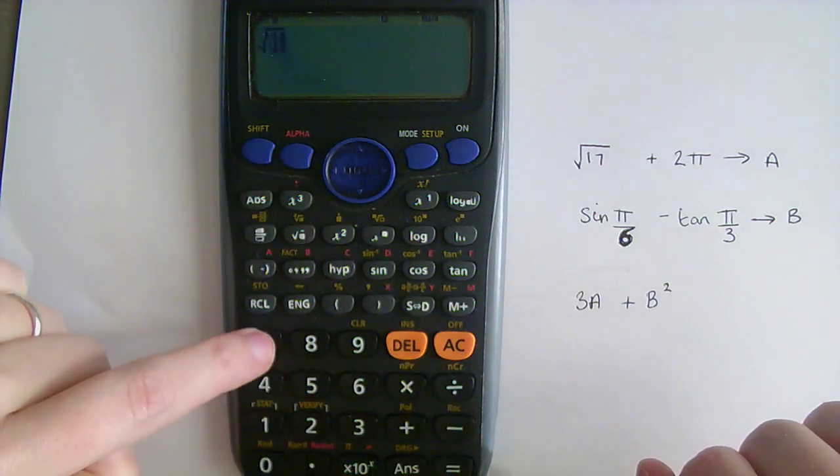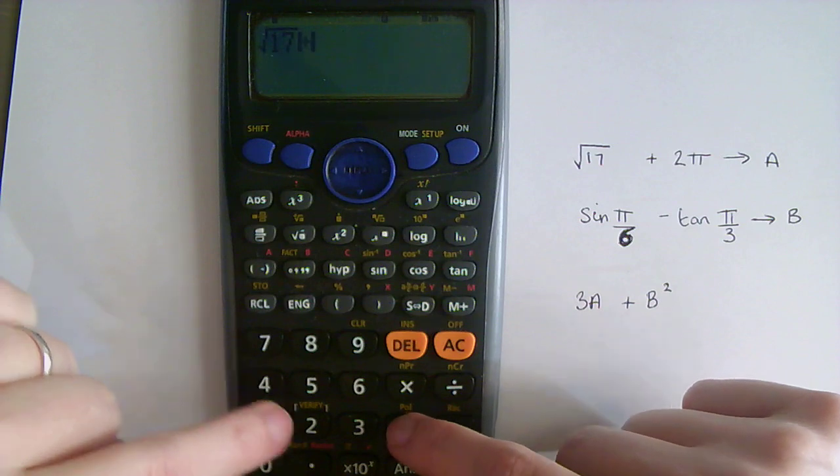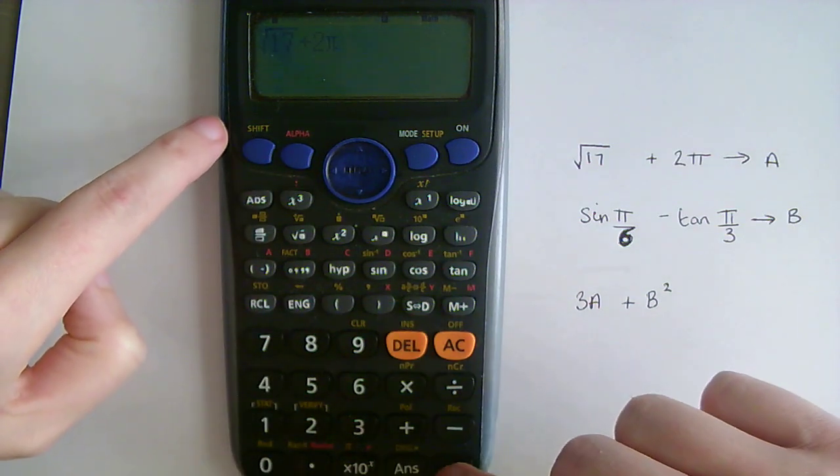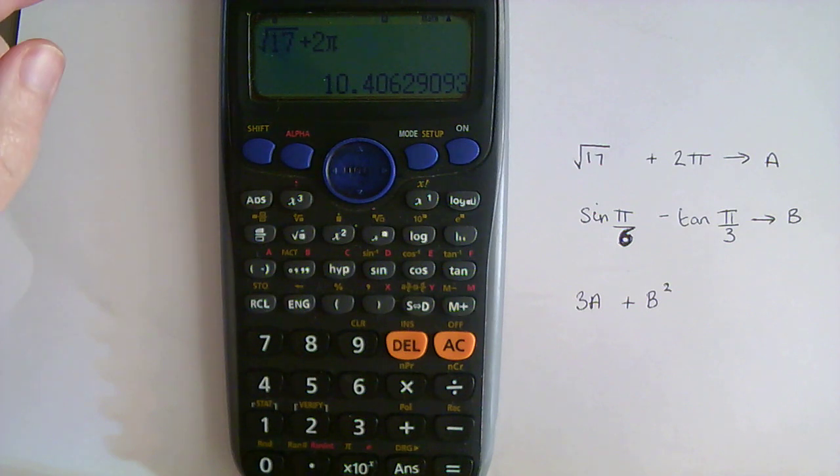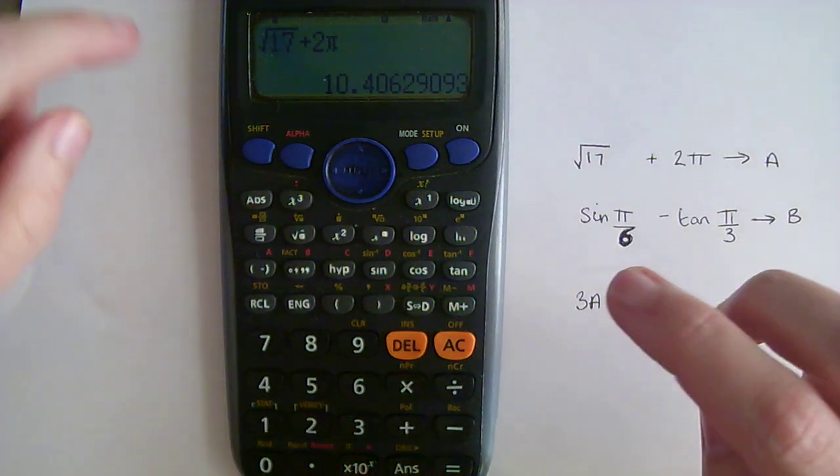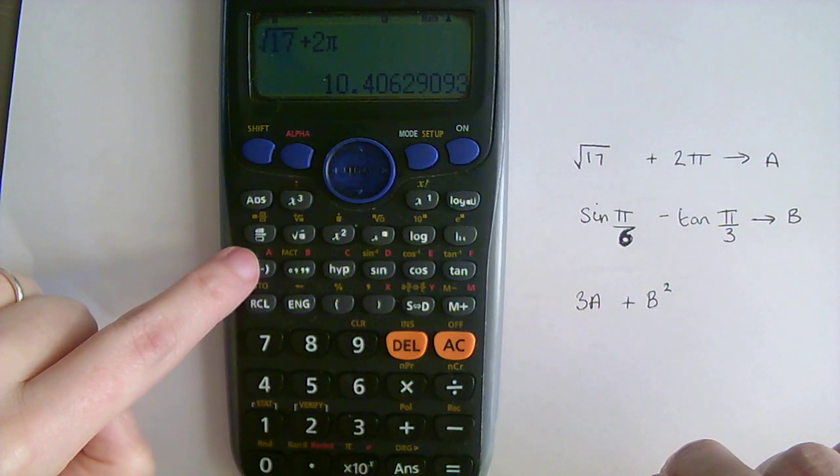root 17 plus 2π, which comes out with this random awkward number, 10.406, so rather than having to write all that down, I'm going to save it into memory A here.